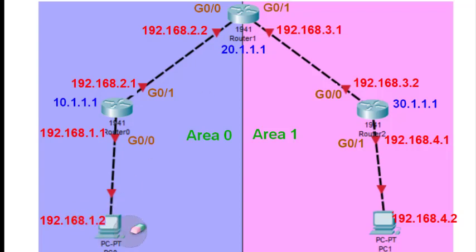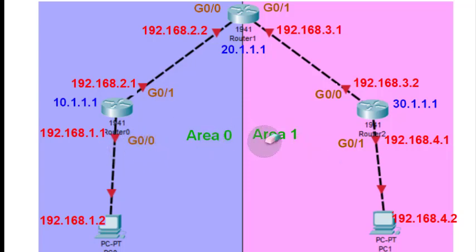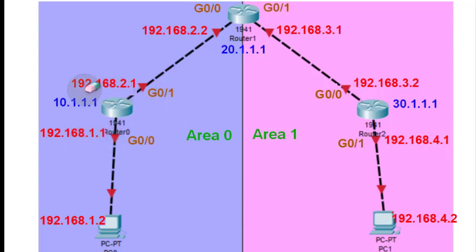PC0 has the address 192.168.1.2. For the router, I am using router 1941, which has two gigabit interfaces: g0/0 and g0/1. It is better, before performing this practical, to write down this topology on a piece of paper so we know what we are configuring where. For g0/0 we are using 192.168.1.1, for g0/1 we use 192.168.2.1, and for router 1, g0/0 is 192.168.2.2.